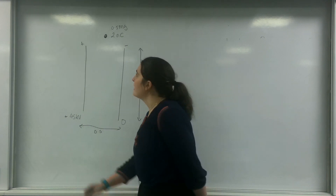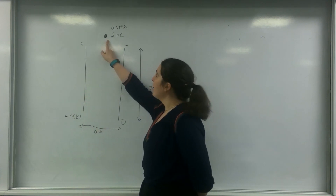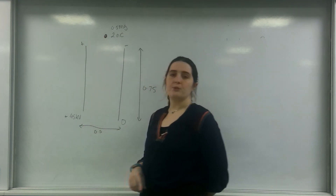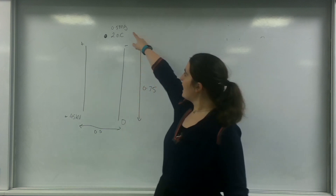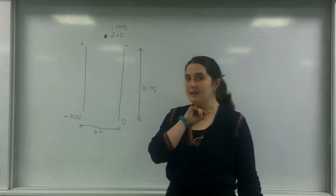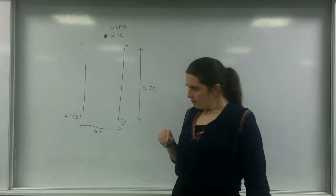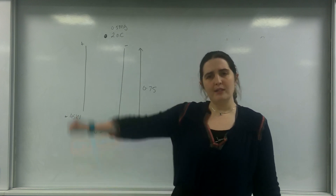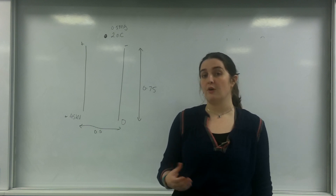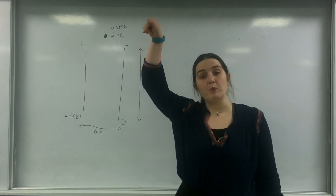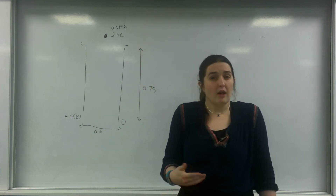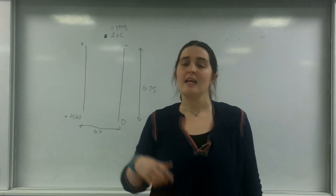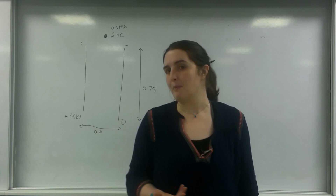What I've got here is a particle that is 2 nanocoulombs, and I'm dropping it through this object which weighs 0.5 milligrams. What's going to happen is it's actually going to be affected by two fields at once — the gravitational field of the earth pulling it straight down, so my acceleration in the y-axis is going to be minus 9.81.